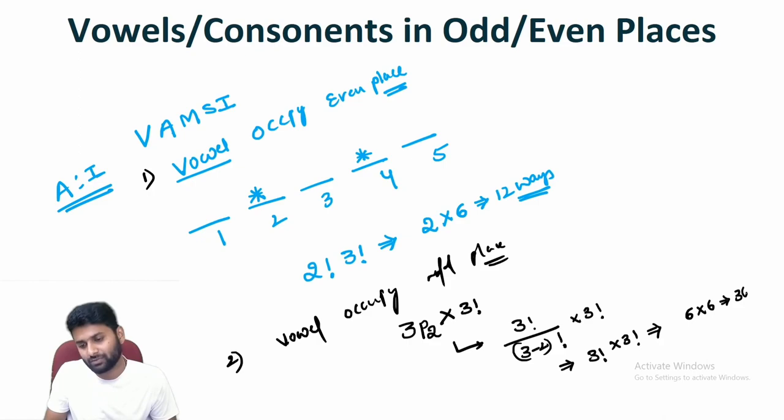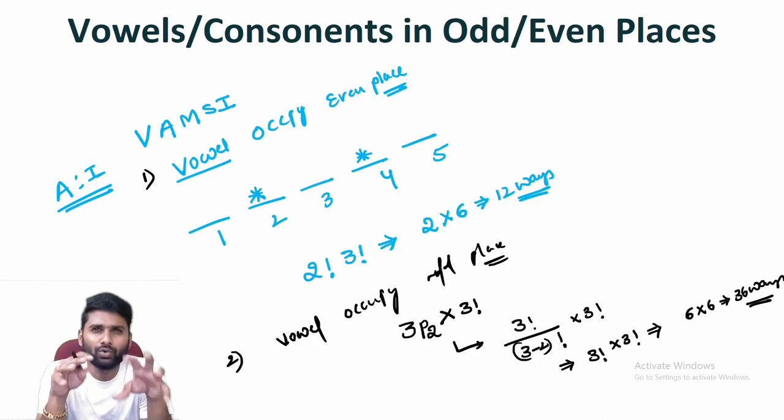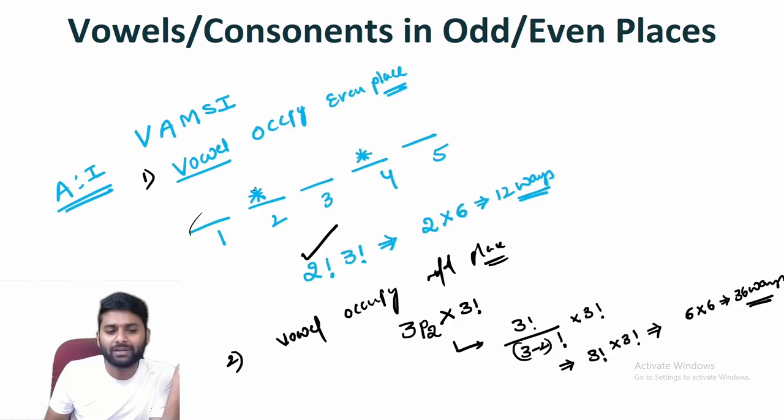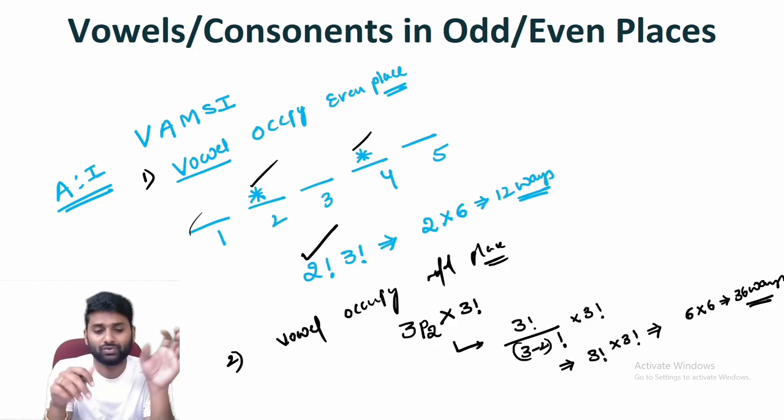To summarize: if we have two vowels and two even places, we arrange them in 2! ways. Remaining three consonants go in three places in 3! ways. So total is 2! × 3! = 12 for even places. For odd places with three odd positions and two vowels, arrangement is 3P2 × 3! = 36.